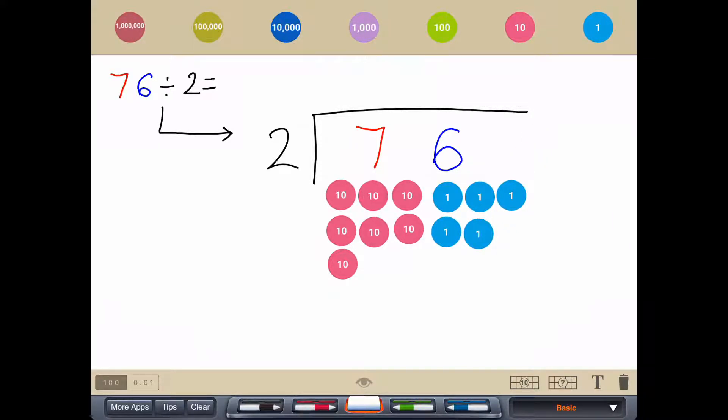We're looking for groups of 2, first of all, in the tens column. So we have got 1 group of 2, 2 groups of 2, 3 groups of 2, and we're going to count those and then record that at the top as 3 groups of 2.